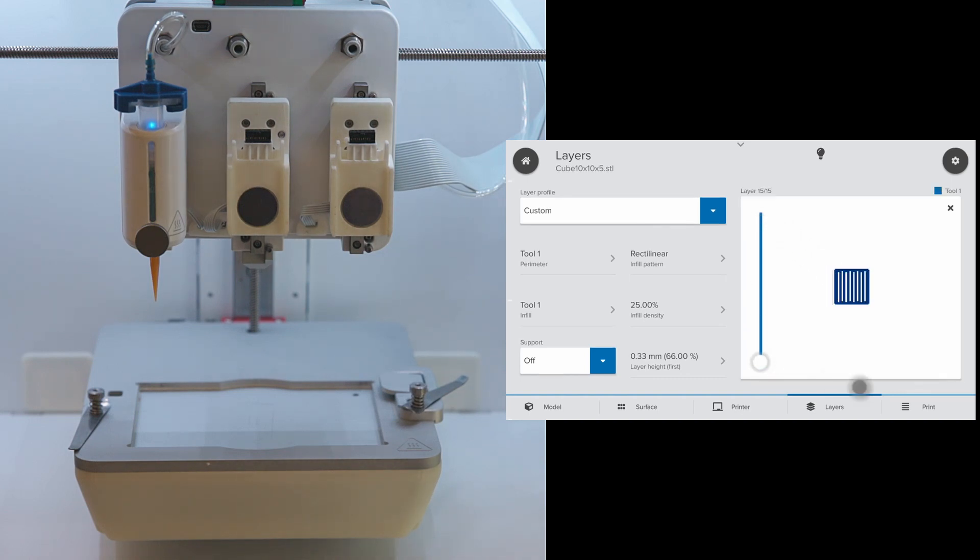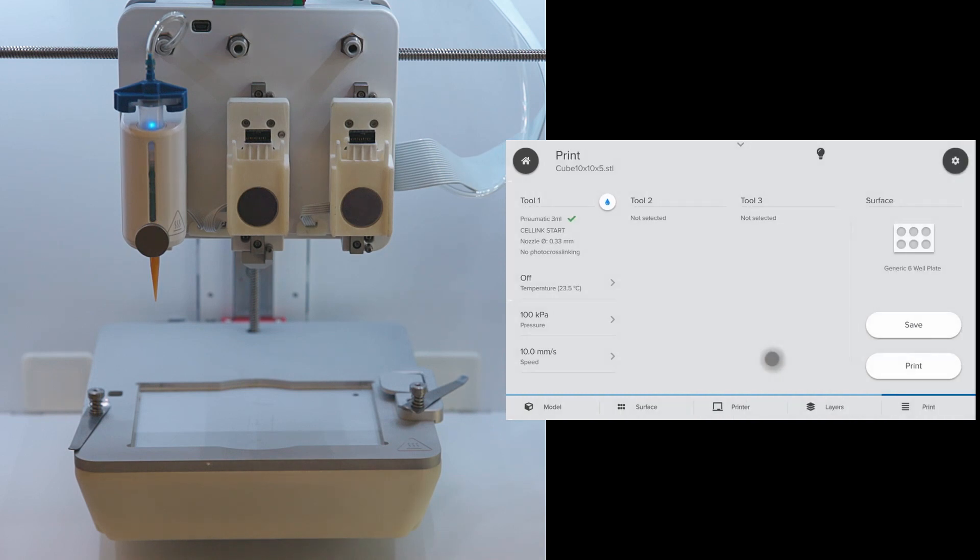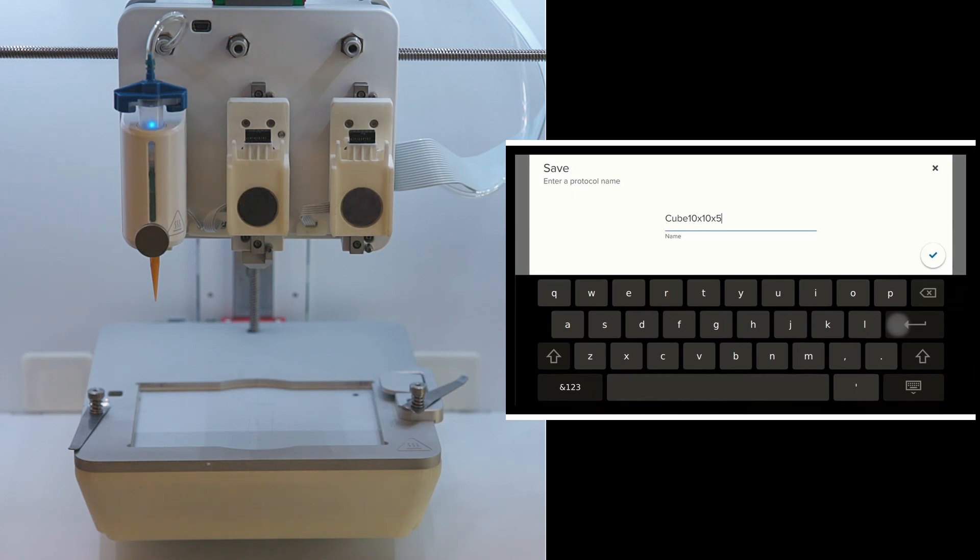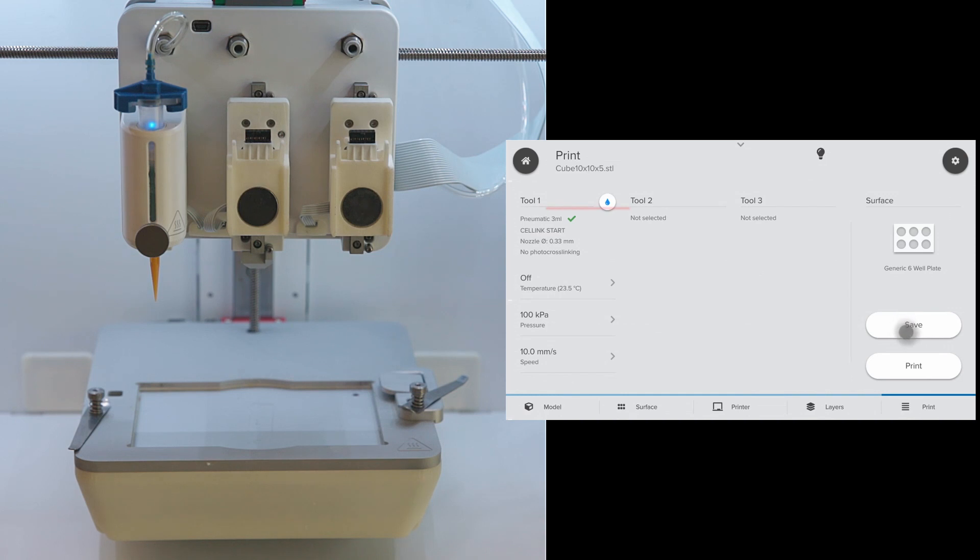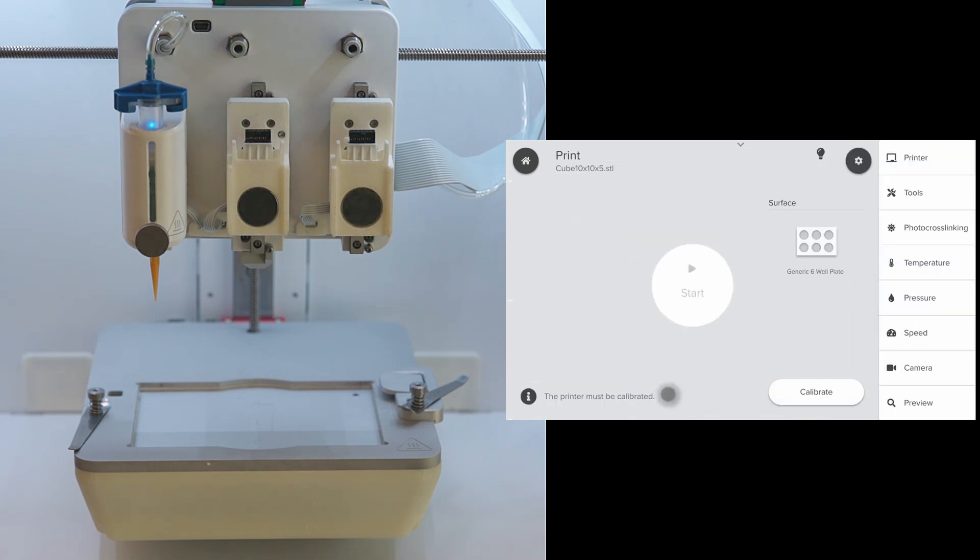Next is the print menu. We can save the print file and rename it so that we can find it later. This will save all the printing parameters including the 3D model, print surface, nozzle diameter, extrusion pressure, print speed, infill pattern, etc. Here is a summary of the printing parameters and we can click print to start printing.